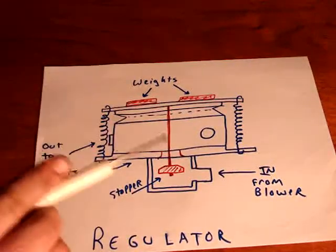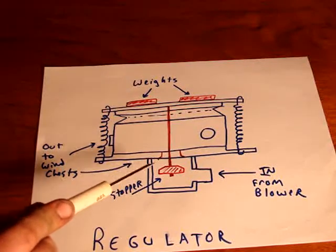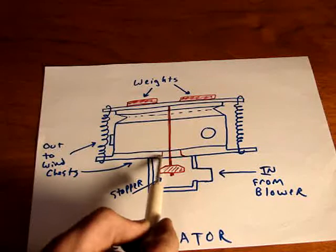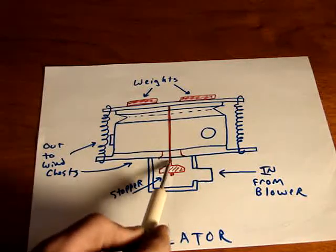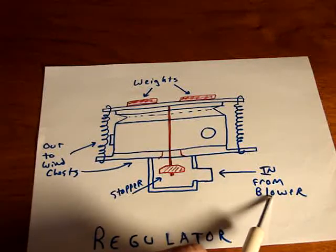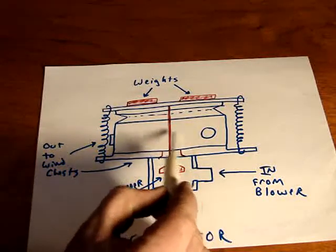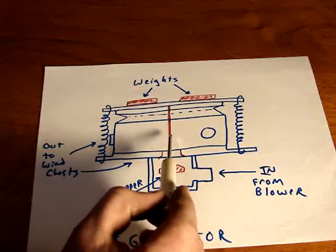There's a hole in this bottom board that this stopper can close. Now the blower blows air into this cavity and up through this hole and into this box here.